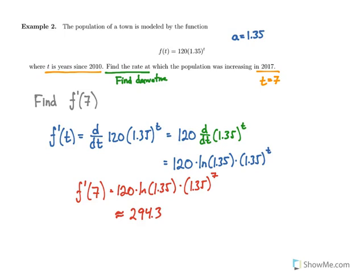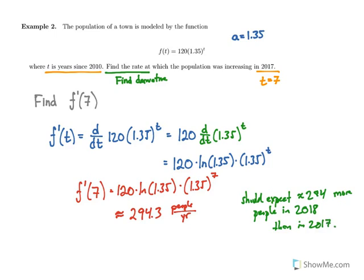So what does this value actually represent? This is the rate at which the population was increasing in 2017. To put it in words, this is 294 people per year. We should expect about 294 more people in 2018 than in 2017. That's interpreting the derivative in terms of words, as we did in section 2.4.